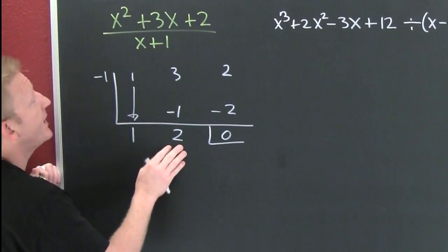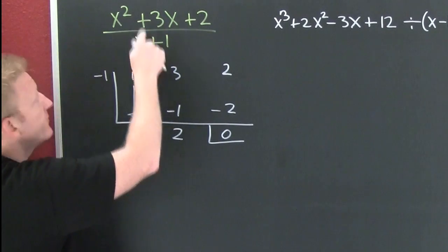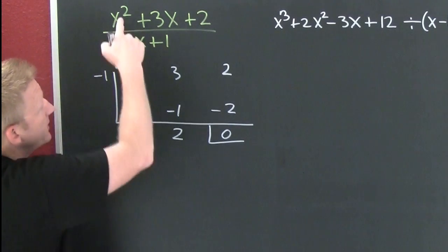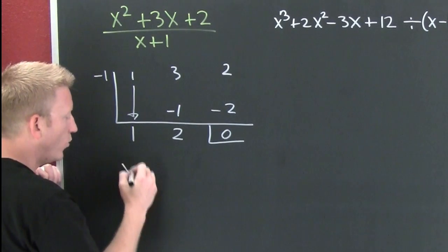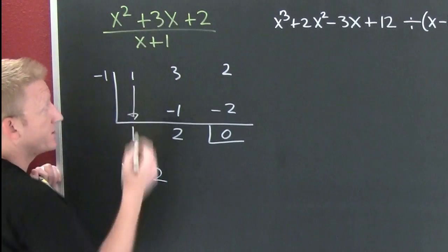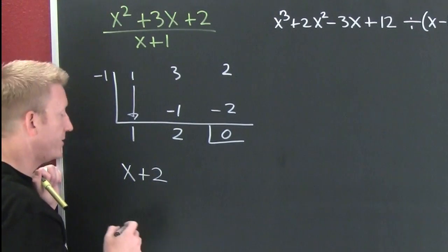We're taking 1 degree out of the numerator. It was a degree 2. So now I want to write my answer as 1 degree less than 2 which is 1. x plus 2 is going to be the quotient of those two polynomials.